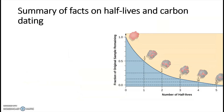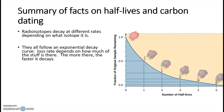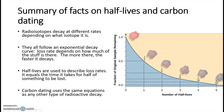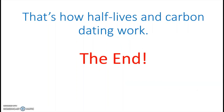To summarize: radioactive isotopes decay at different rates depending on what isotope they are. They all follow that exponential decay curve — the loss rate depends on how much of the material is present, starting fast and plateauing over time. Half-lives describe the time for half of something to be lost. Carbon dating uses the same equations as any other radioactive decay, allowing fairly confident age predictions that can often be backed up by historical records. That's how half-lives and carbon dating work.